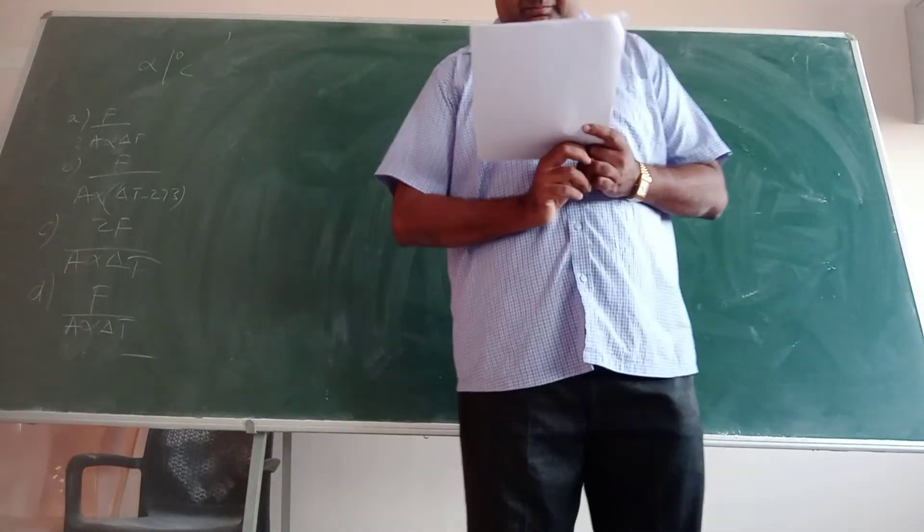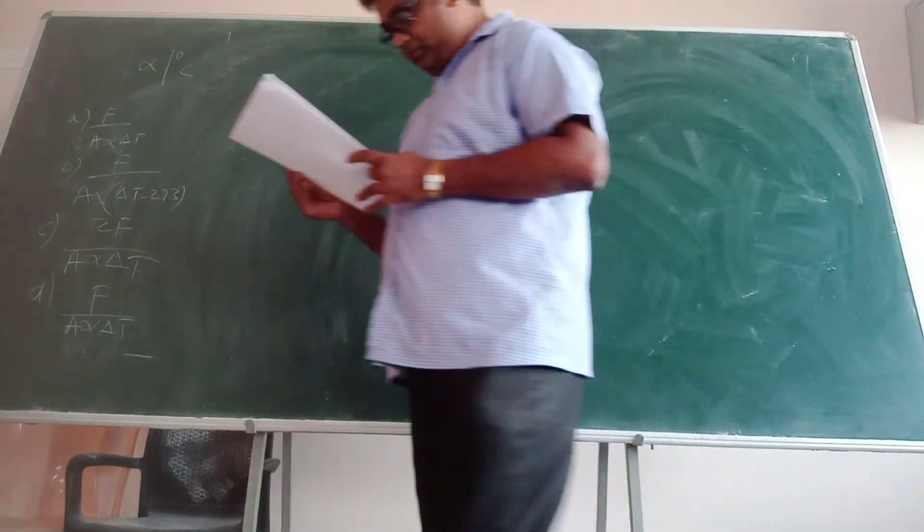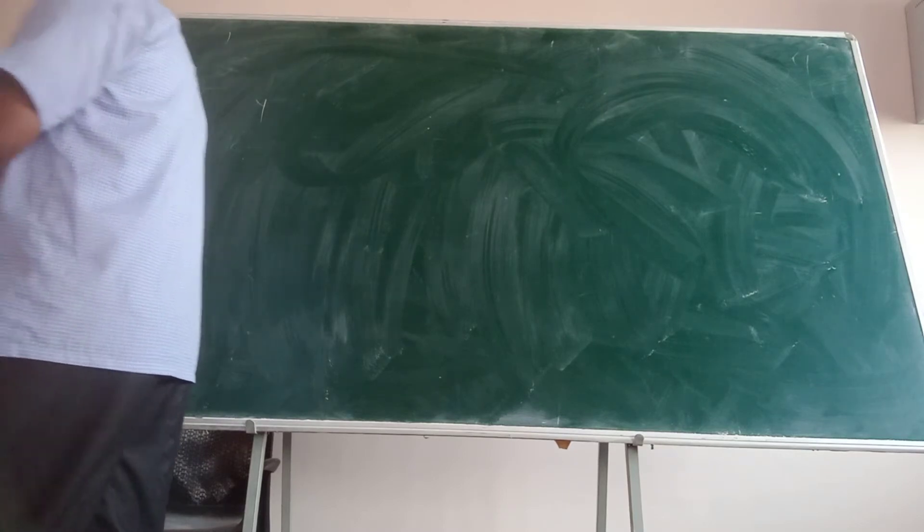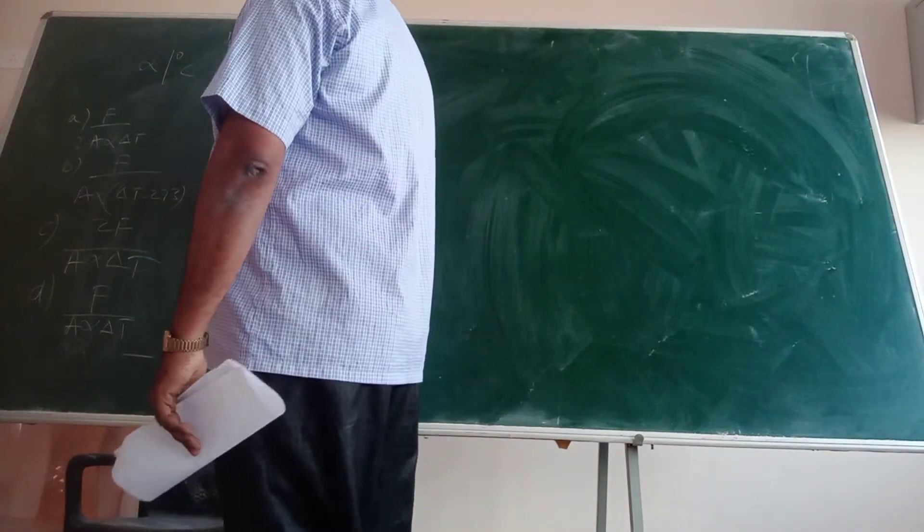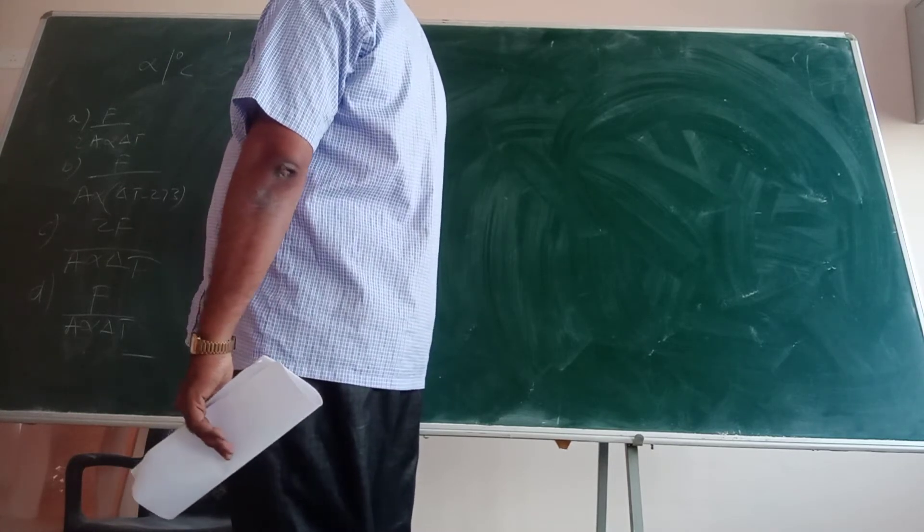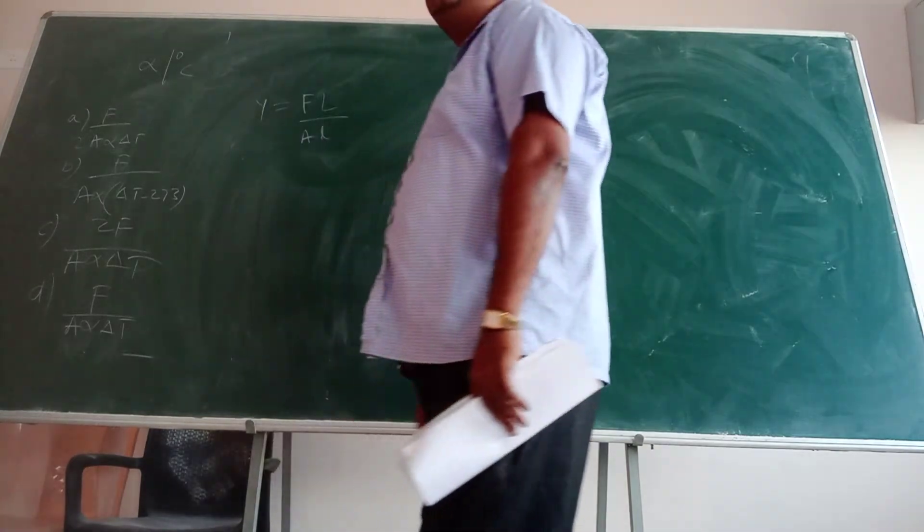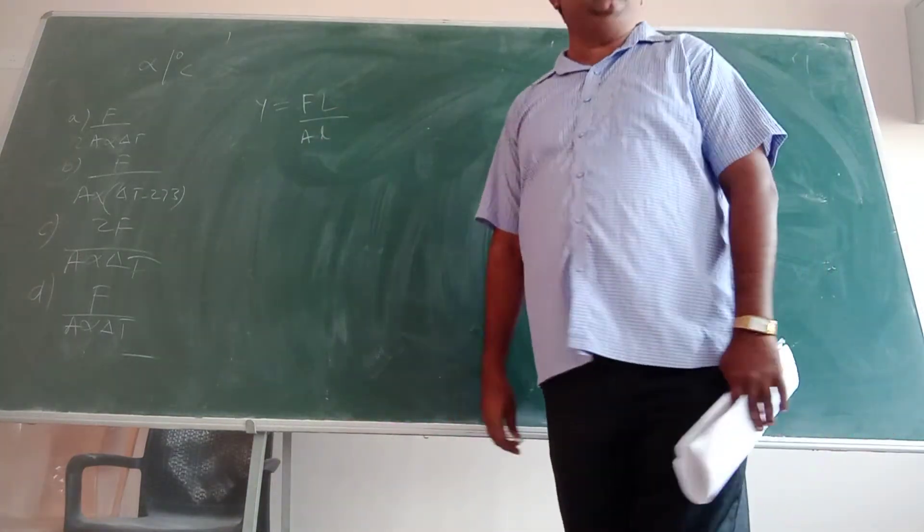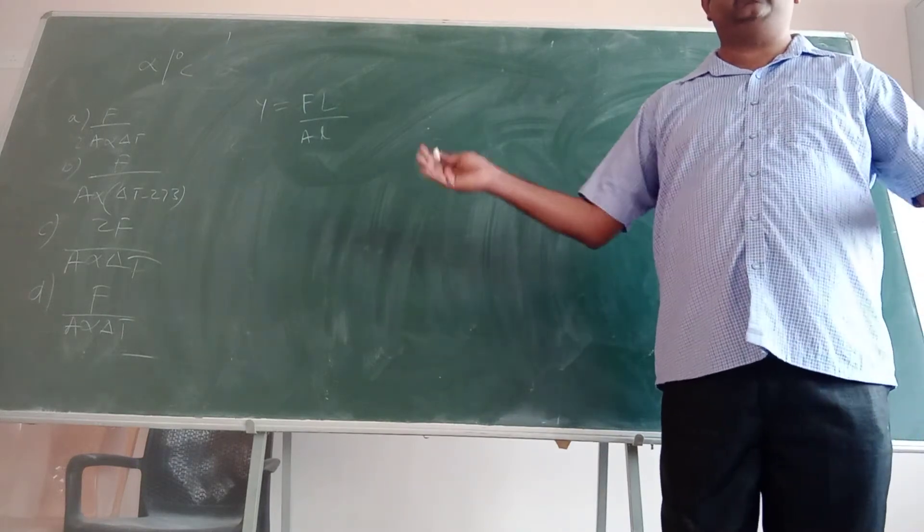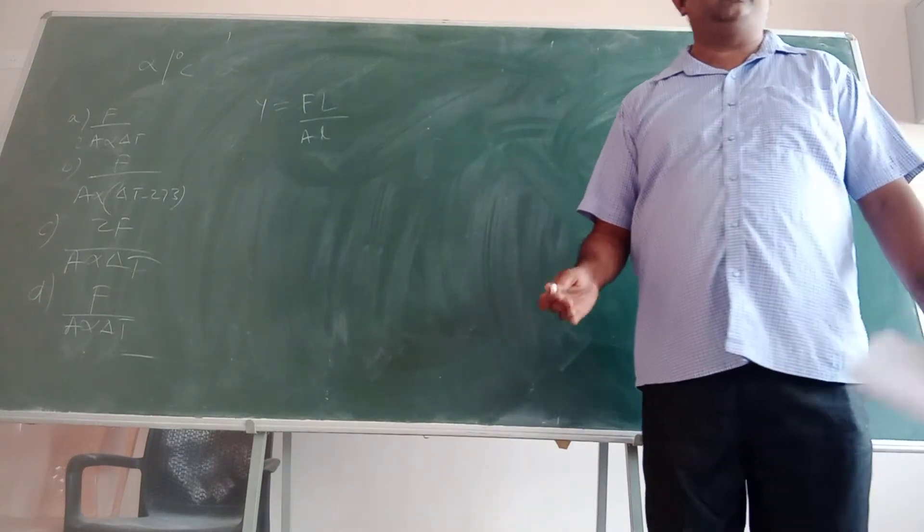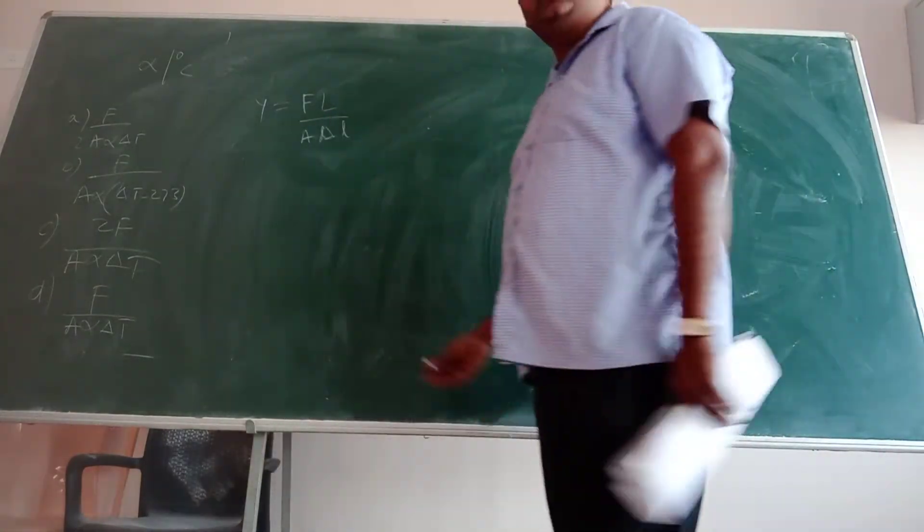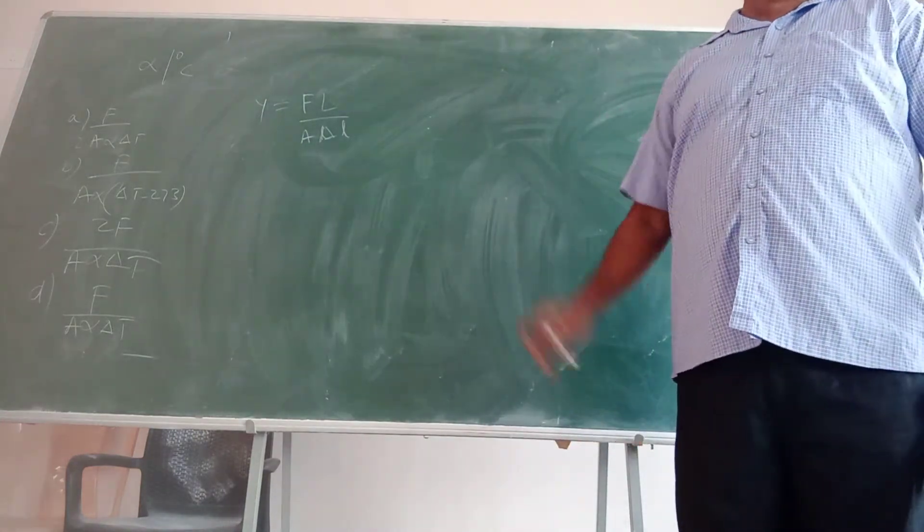Alright, so we are supposed to find Y. What is the expression for Y? What is the definition? It is F L over A by delta L. Or you can sometimes write it as small L. Small L means extension. It can be an extension or a contraction. Extension in case of tensile force, contraction in case of compressive force.